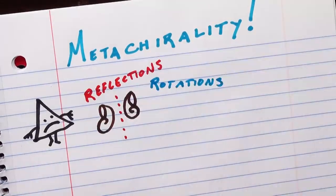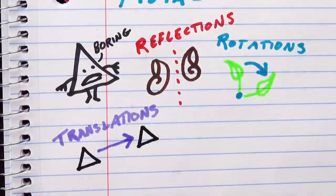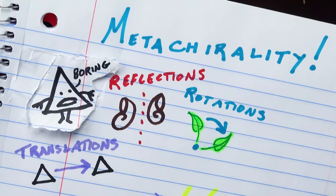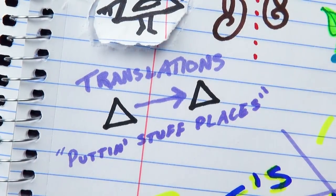So you're tired of symmetry being all about reflections and rotations, or the most boring of all, translations, which is just like putting stuff places. Putting stuff places, it's math.